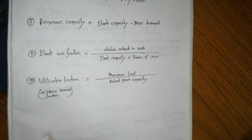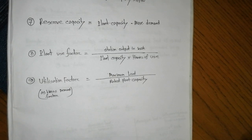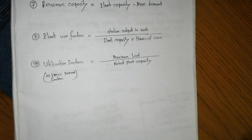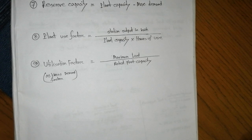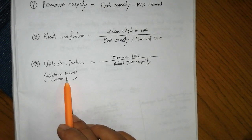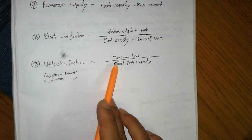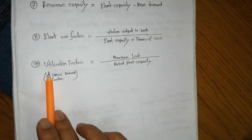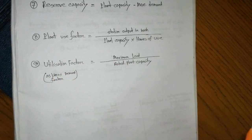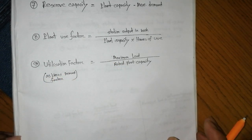The plant use factor, also known as the utilization factor, is similar to the demand factor. The utilization factor is the maximum load divided by the rated plant capacity.